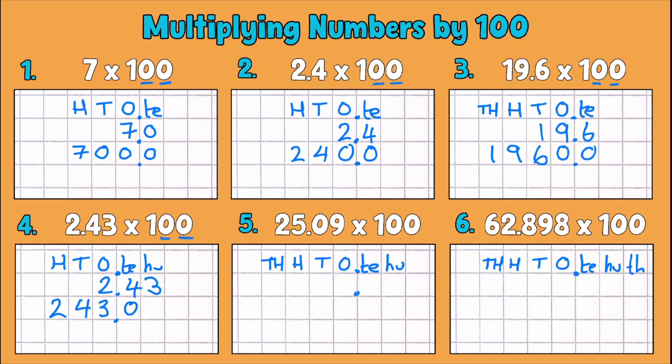So our next example is 25.09. Decimal place nicely in line and once again everything moves one two places over to the left.